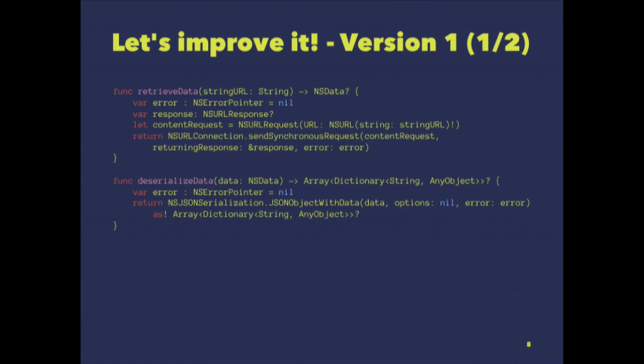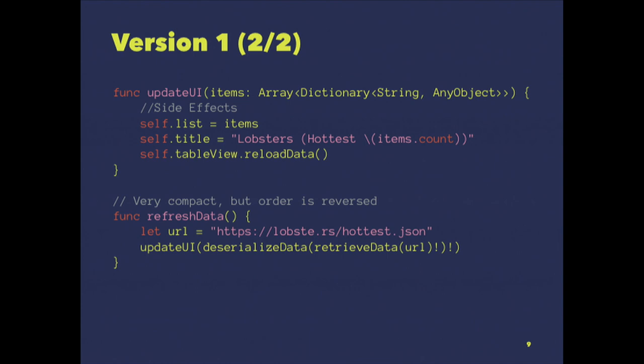In functional programming, the goal is to create small chunks of code, to make it easier to understand, easier to scale, and easier to change. So let's create three functions: retrieve the data, serialize the data. And we are isolating side effects, because the update UI function is the only one dealing with the outside world — updating the list, setting the title, and reloading the table view.